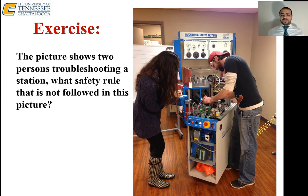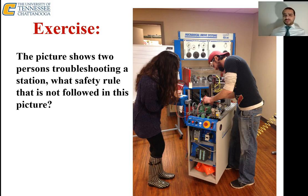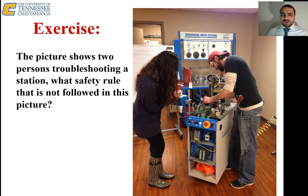This exercise shows a picture of two students. The question is: what safety violation is there? The safety violation is the hair — the hair needs to be tied up.